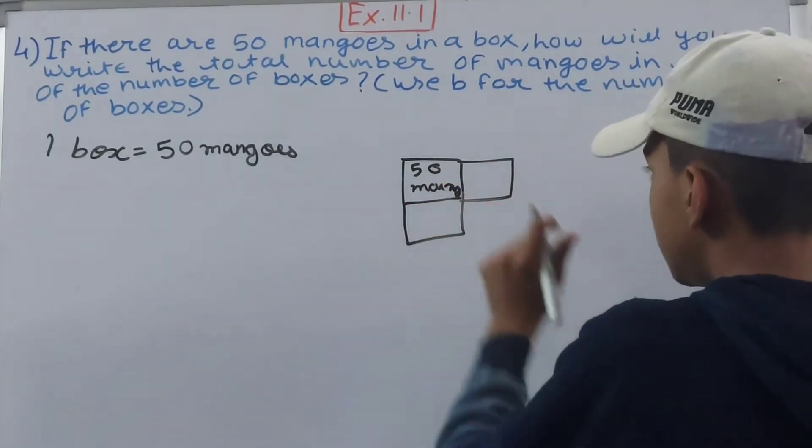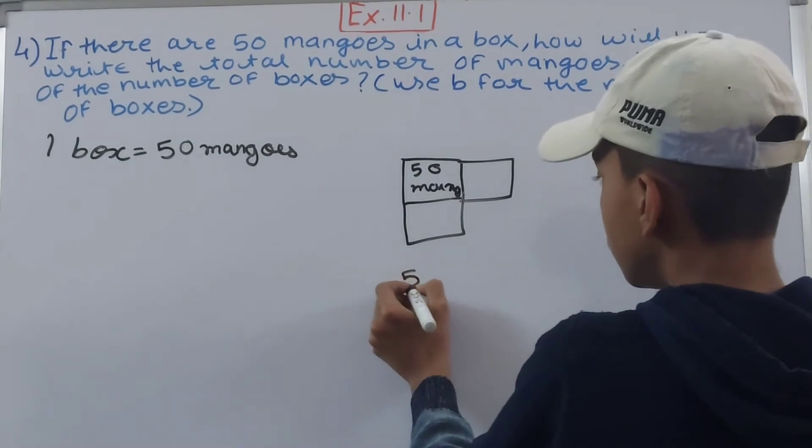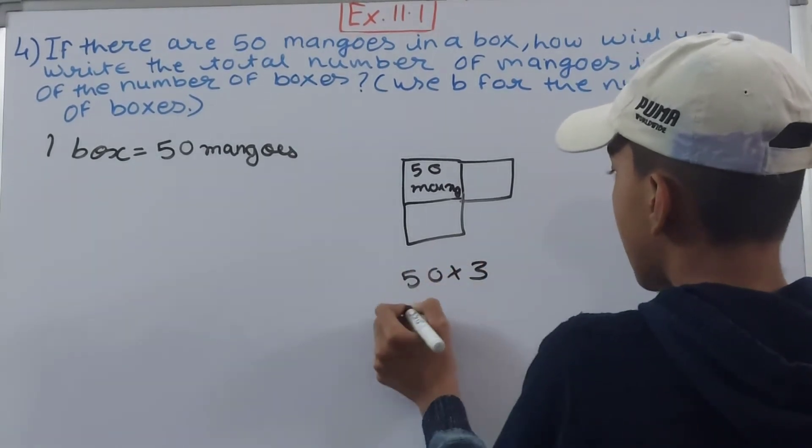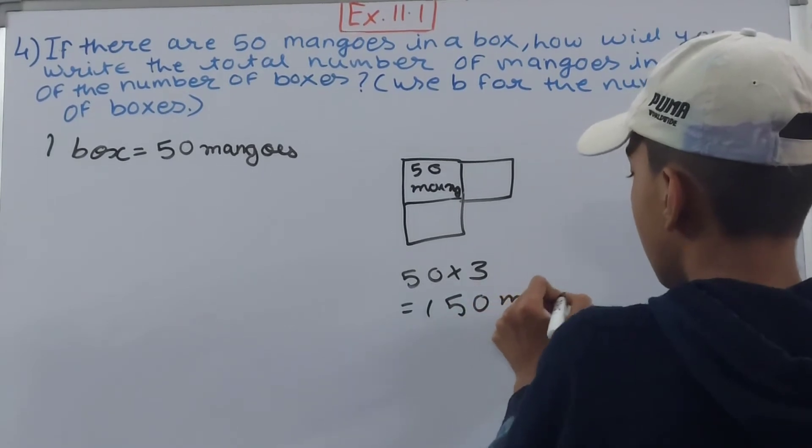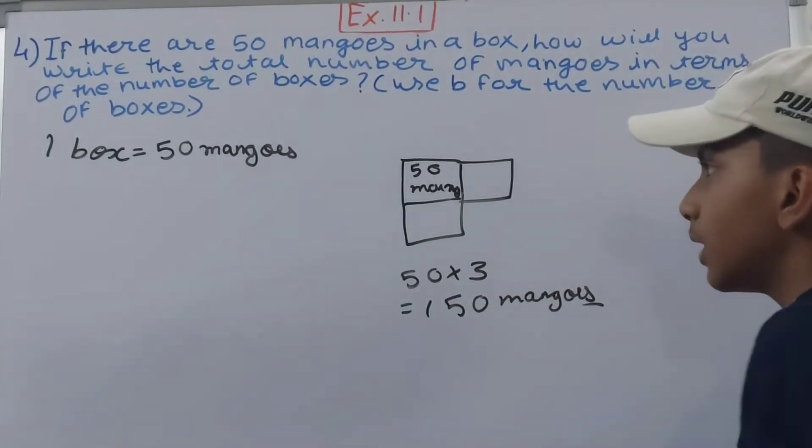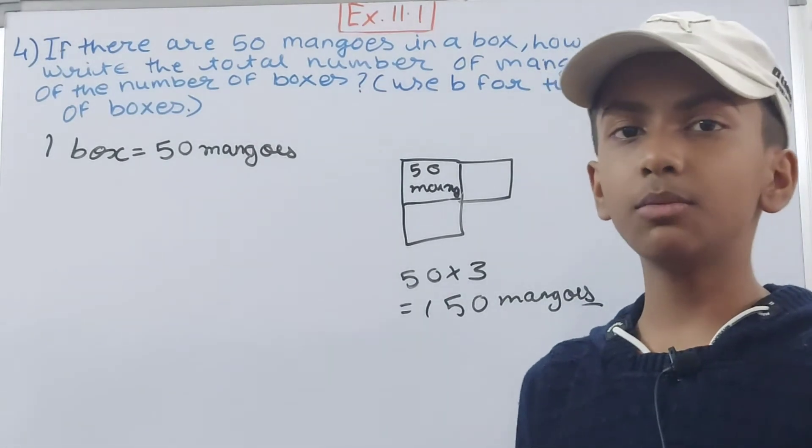...one, two, three. And in one box you have 50, so you will do 50 into 3, that is 150, right? So 150 mangoes will be in three boxes. But we don't know what is the exact number of boxes...